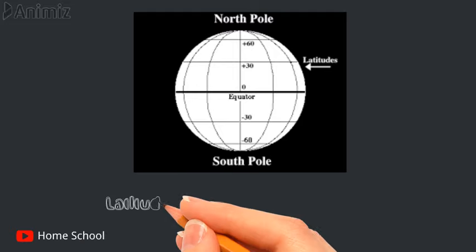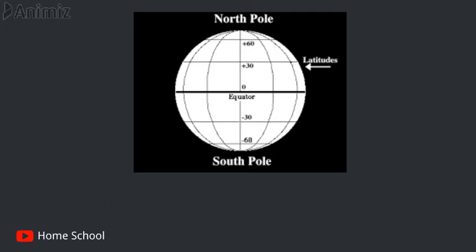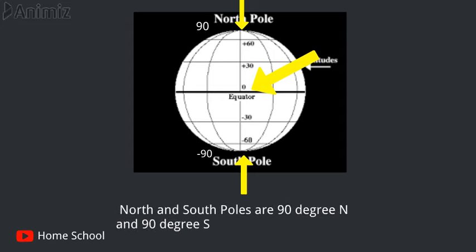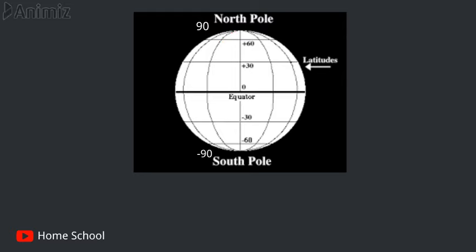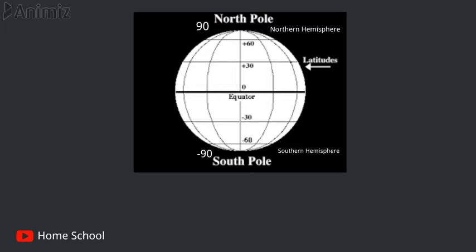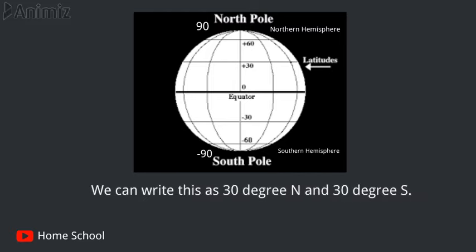How are latitudes measured? Latitudes are measured in degrees. As you can see here, the equator represents zero degree while the north and south poles are 90 degree north and 90 degree south. Starting from the equator, as we move forward towards both the sides, the numbers keep on increasing — like 0 degree, 30 degree, 60 degree, 90 degree towards the northern hemisphere. Just remember that the numbers in the northern hemisphere are positive while the numbers in the southern hemisphere are negative. So if we have 30 degree, that means it is in the northern hemisphere, and if we have minus 30 degree, that means it is in the southern hemisphere. We can also write this as 30 degree north and 30 degree south.